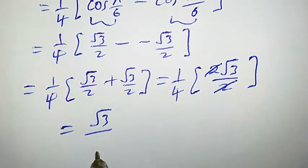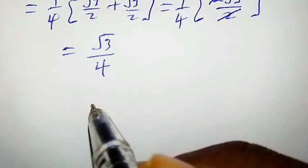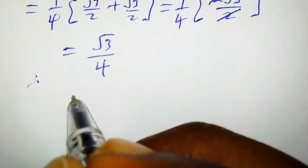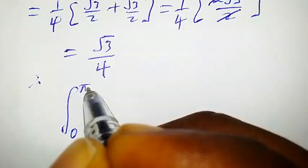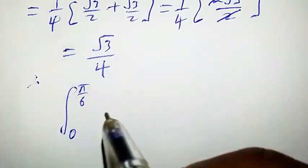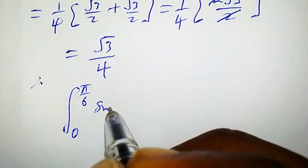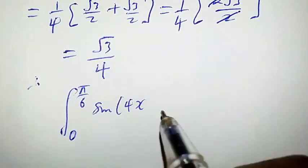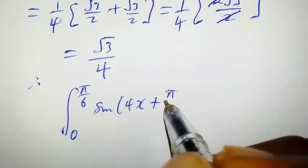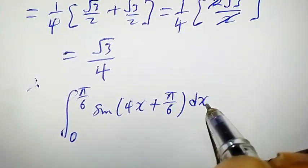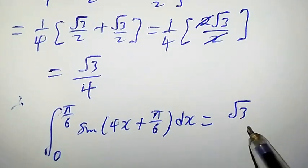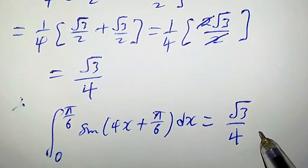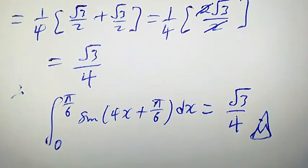Therefore we can claim that the integral from 0 to π/6 of sin(4x + π/6) dx is equal to √3/4. This is the required solution.